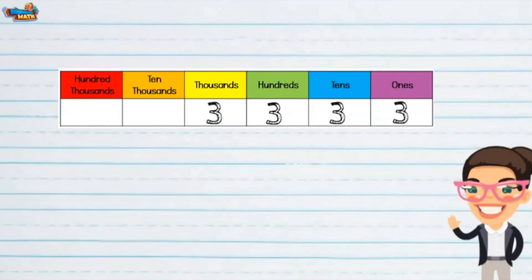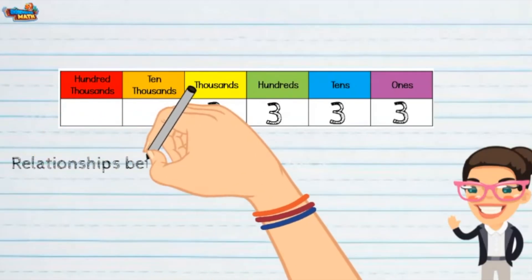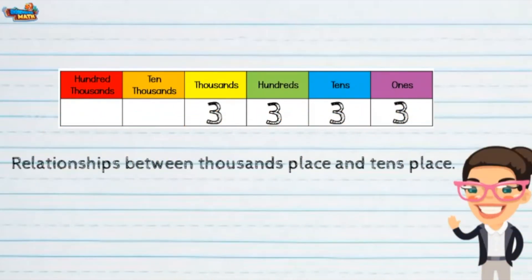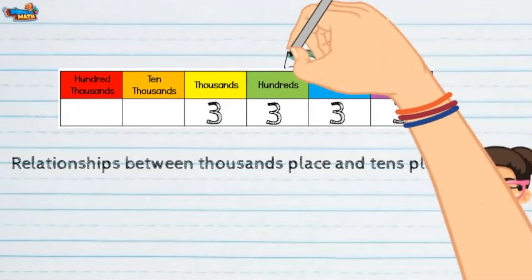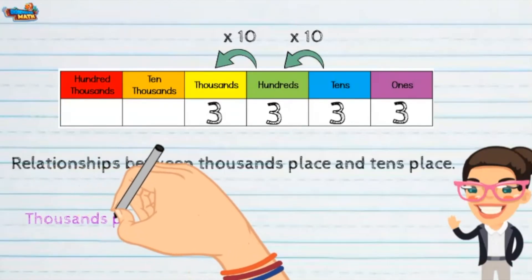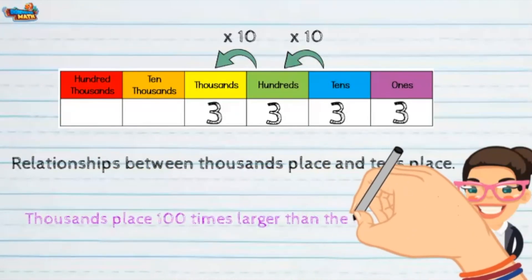Now find the relationship between the thousands place and the tens place in the number 3,333. Moving right to left, starting at the tens place, the tens place is two place values away from the thousands place, or 10 times 10. The thousands place is 100 times larger than the tens place.